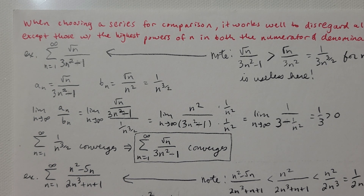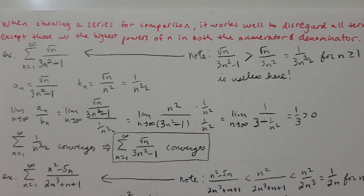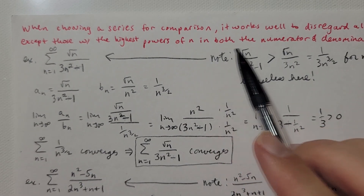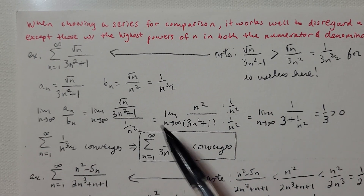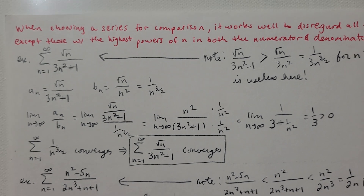We'll finish up section 11.4. When choosing a series for comparison using the comparison test, it works well to disregard all the terms except those with the highest powers of n in both the numerator and denominator. Here's a series we want to determine if it converges or diverges: the summation from n equals 1 to infinity of the square root of n divided by 3n squared minus 1.